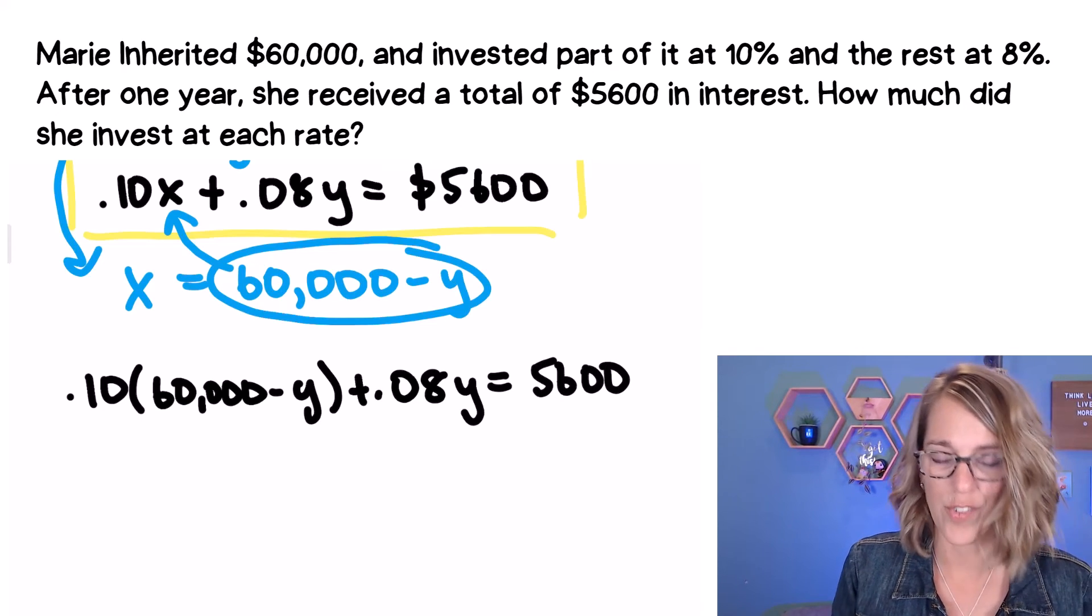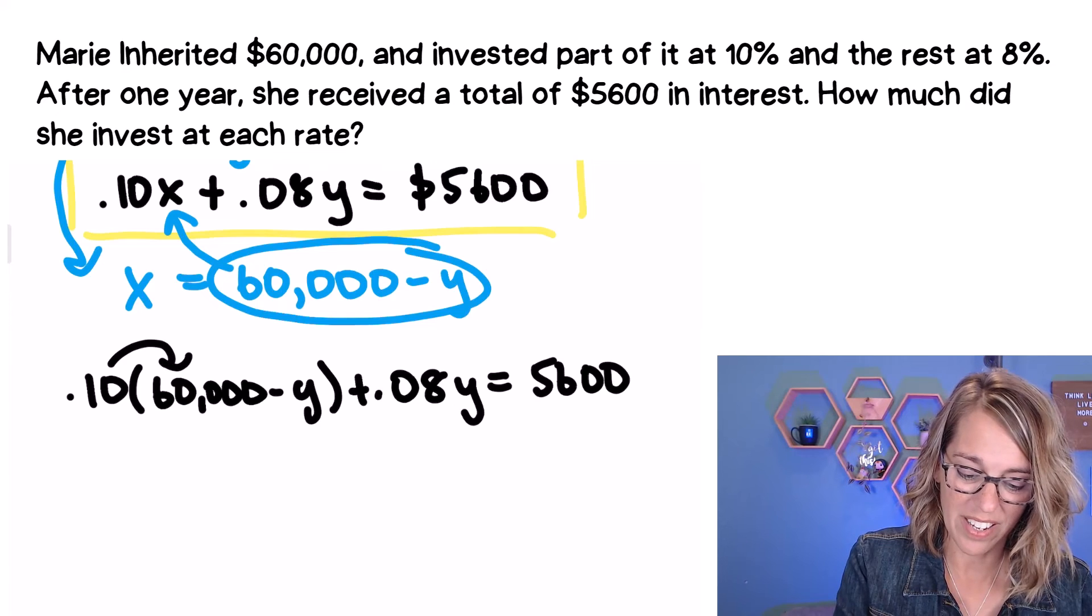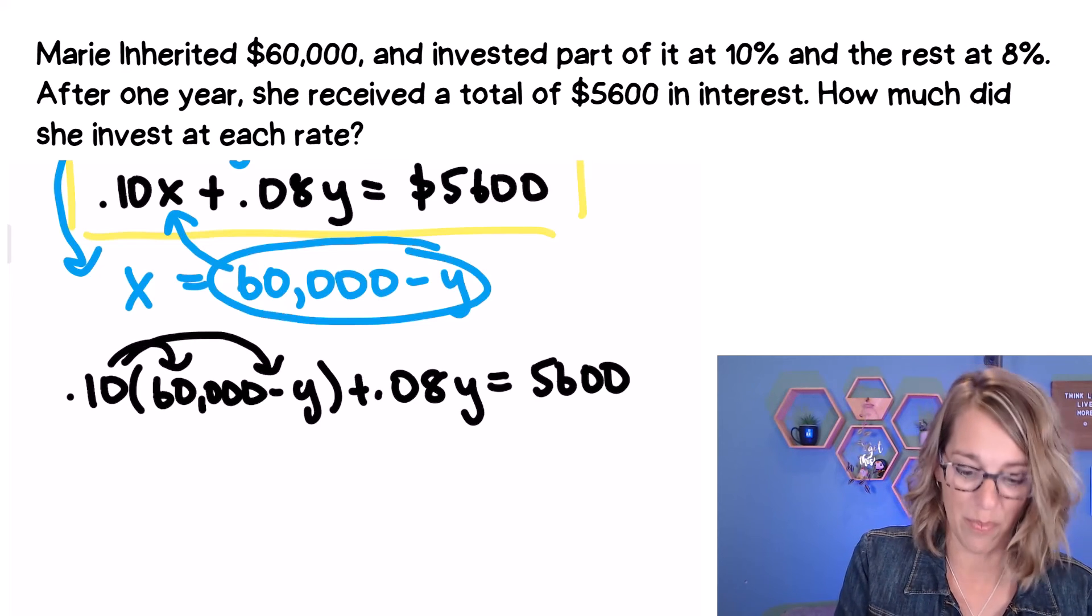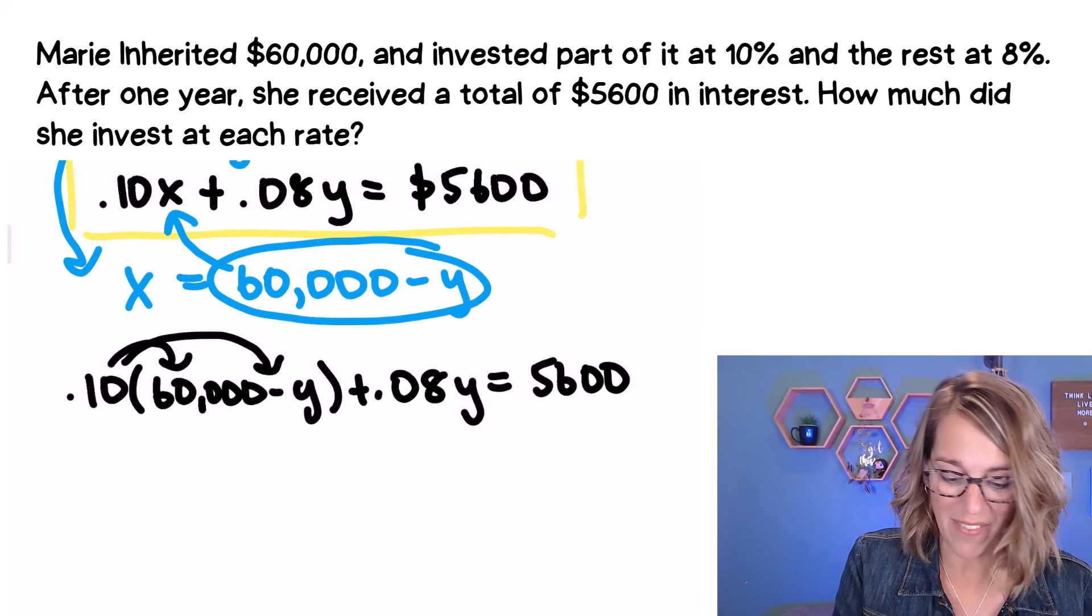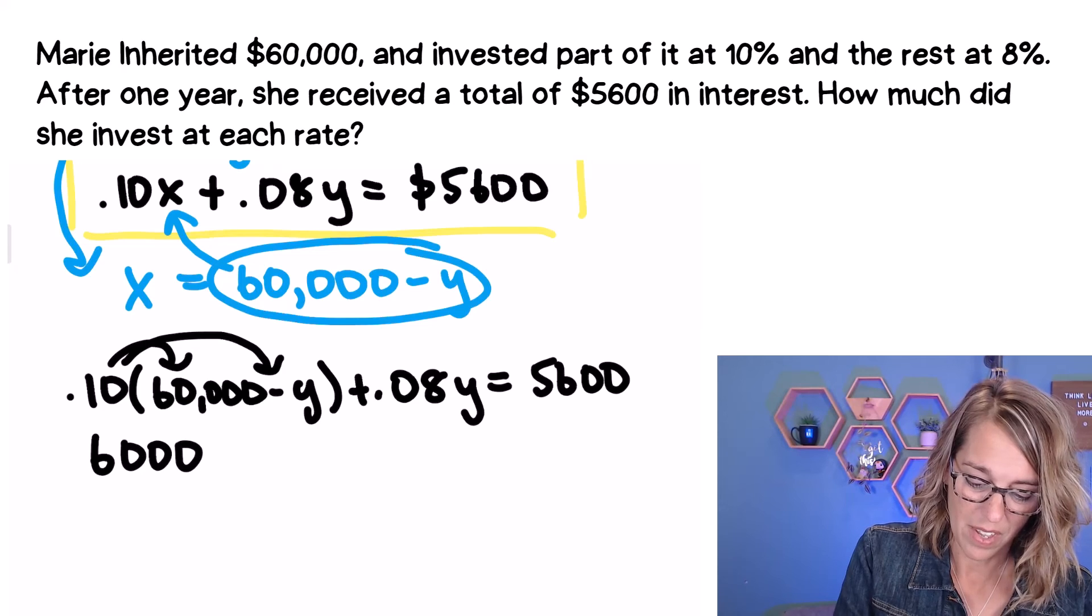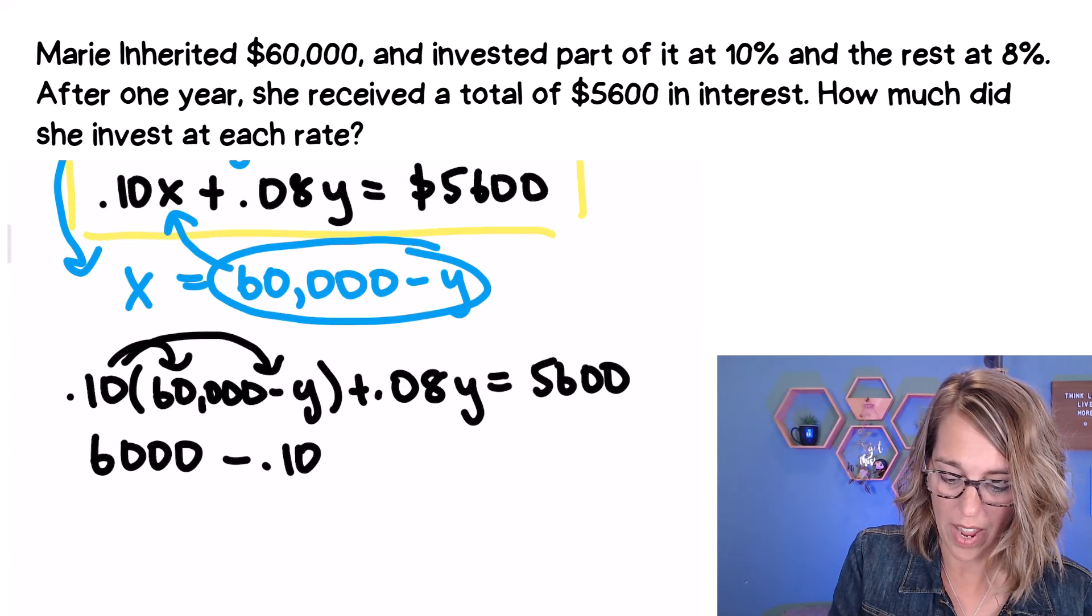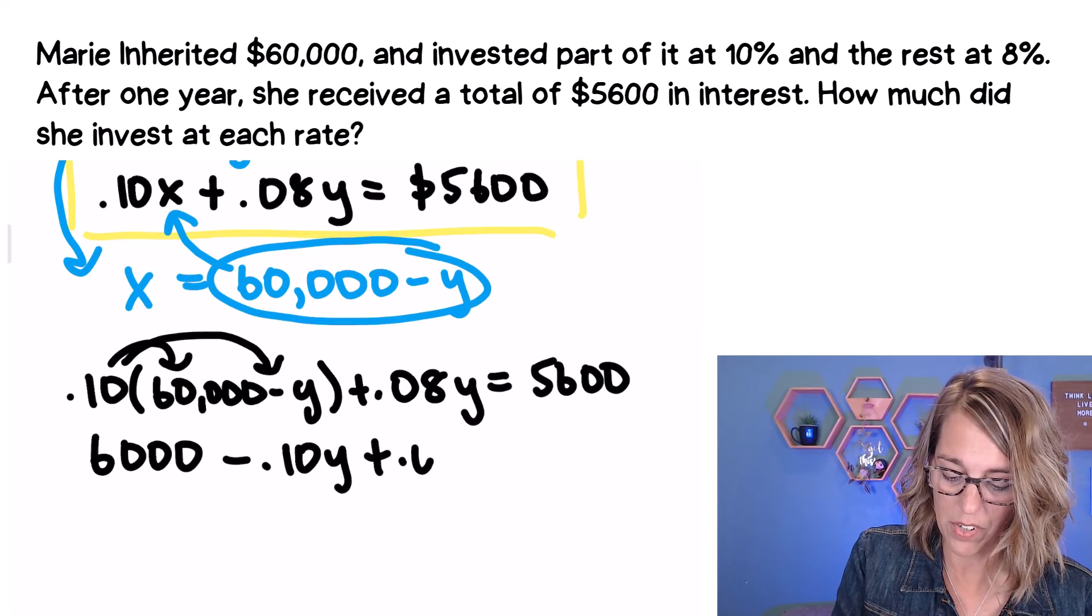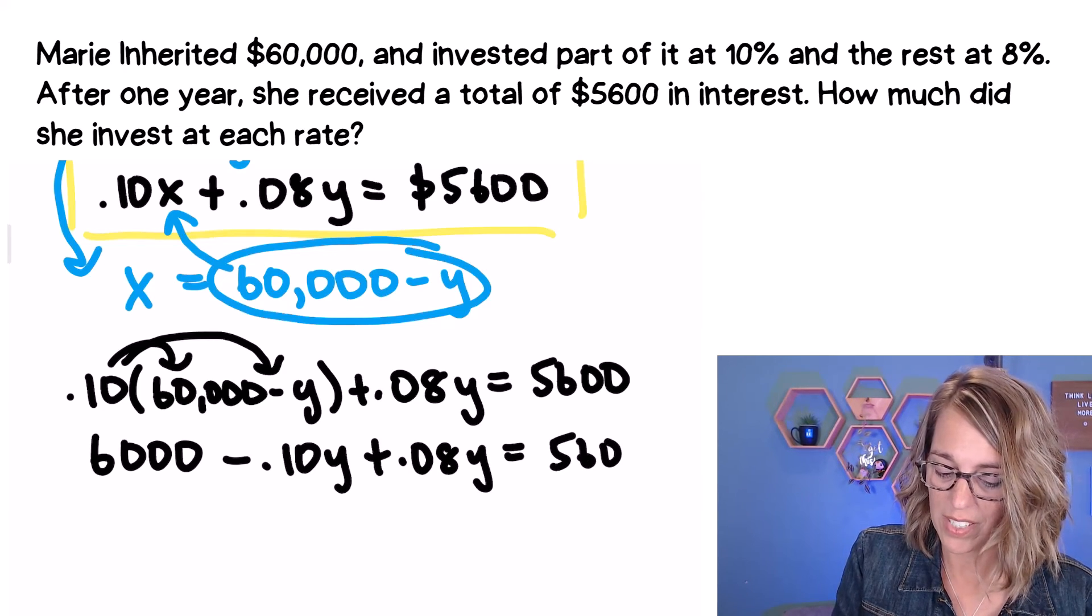So I've got 0.10 times X, which is 60,000 minus Y plus 0.08Y is equal to 5600. Now I'm ready to simplify. Let's multiply that 0.1 into that first set of parentheses. 0.1 times 60,000, you can definitely do this on your calculator, you're going to get 6,000 minus 0.10 times Y, 0.10Y plus 0.08Y is equal to 5600.